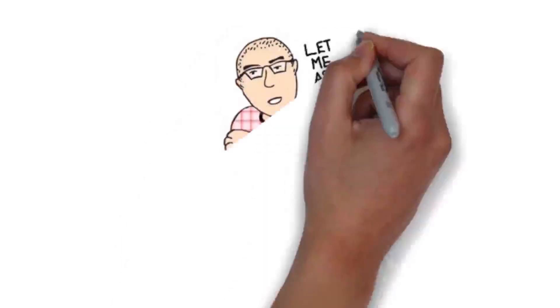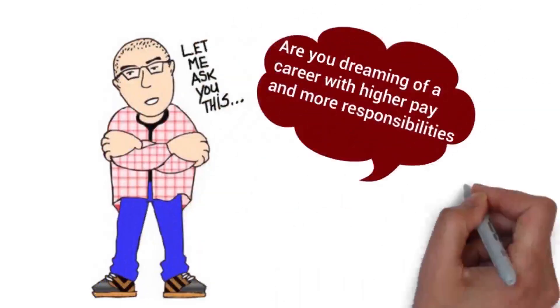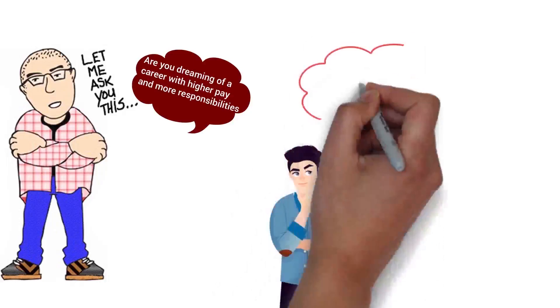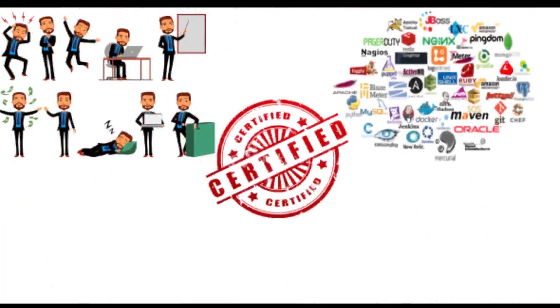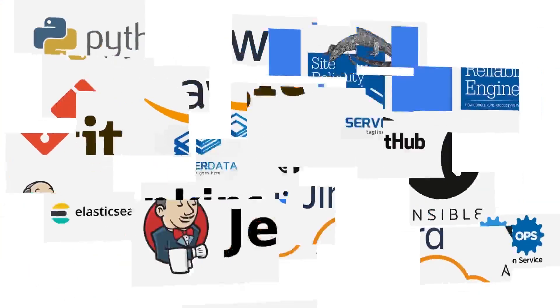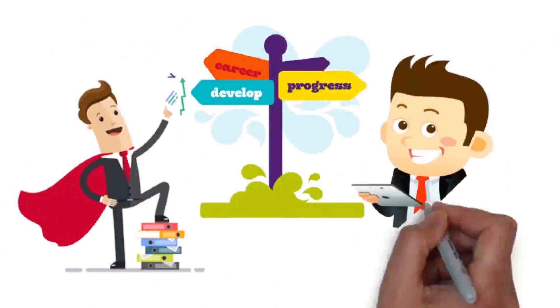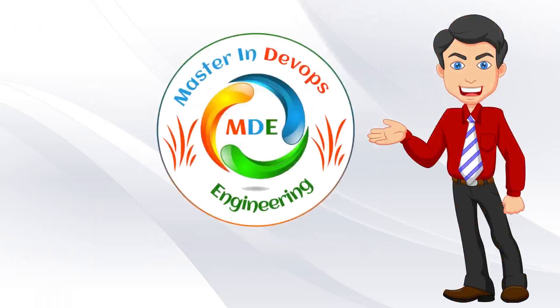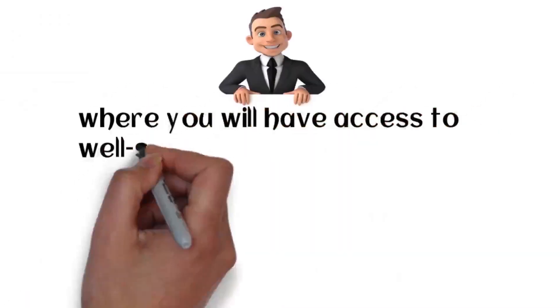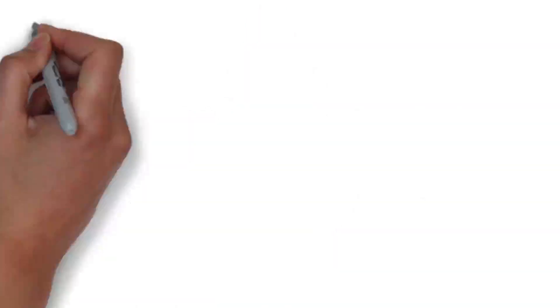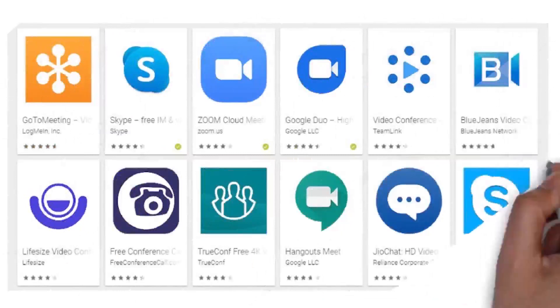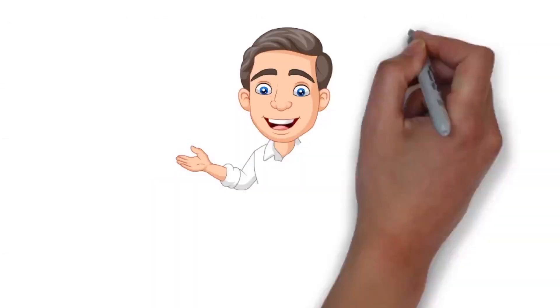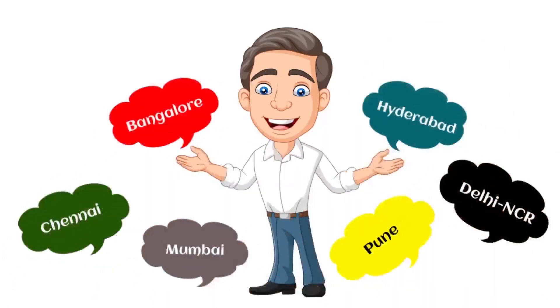Before we get started, are you dreaming of a career with higher pay and more responsibilities, or are you ready to take your skills to the next level this year? Then start investing in DevOpsSchool certification label courses. We offer courses like Agile Developer, Agile QA, DevOps Certified Professionals, Site Reliability Engineering, DevSecOps, and Masters in DevOps Engineering, delivered by industry professionals through online platforms and classroom workshops in Bangalore, Hyderabad, Chennai, Delhi NCR, Mumbai, and Pune.